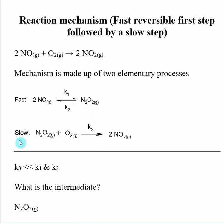In the second step, it's a slow step. It's not reversible, but the K constant for this is K3. Because it's slow, we know that K3 is much smaller than K1 and K2.